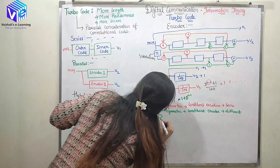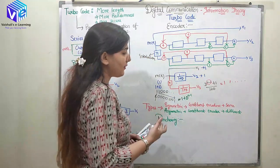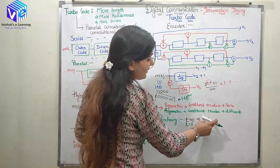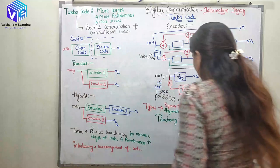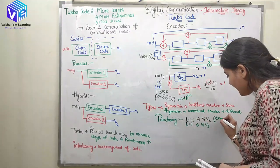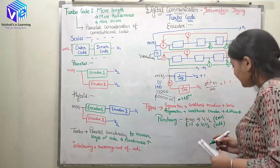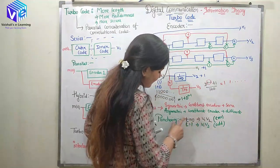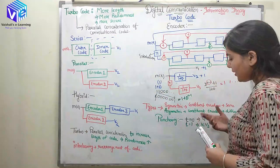Now we will move to a basic concept which is called puncturing. Whenever I have 3 outputs but don't require 3 outputs, whenever t is equal to 0 I am taking V1 and V2 as output, and whenever t is equal to 1 I am taking V1 and V3 as output. So this time I just have 2 outputs. Whenever t is even I am taking the output as the combination of V1 and V2, and whenever the time is odd I am taking V1 and V3 combined. My outputs are 2 now — this is called puncturing.